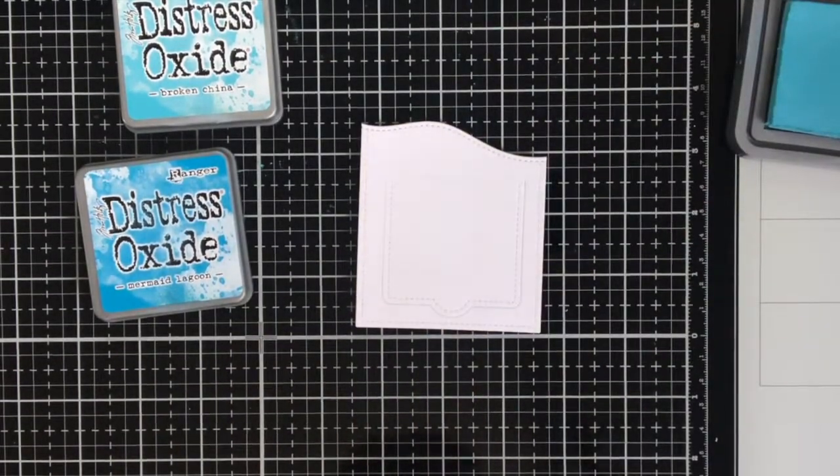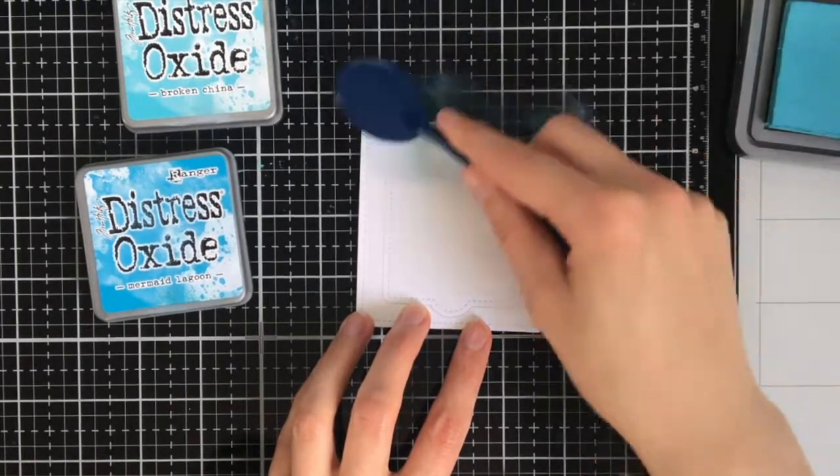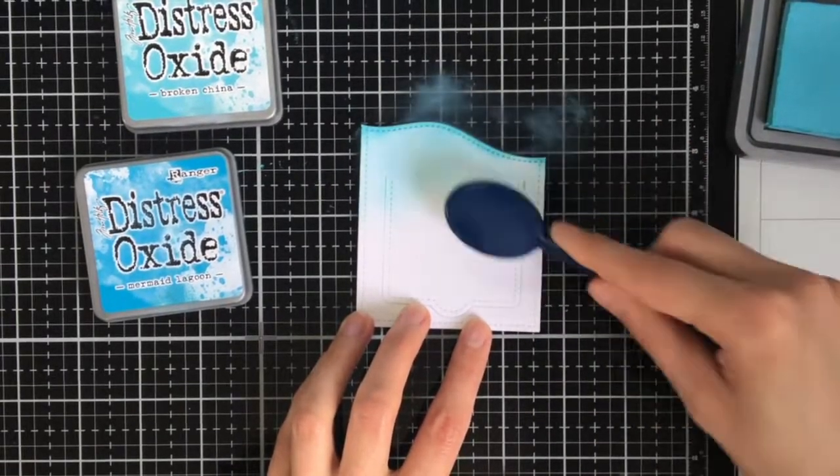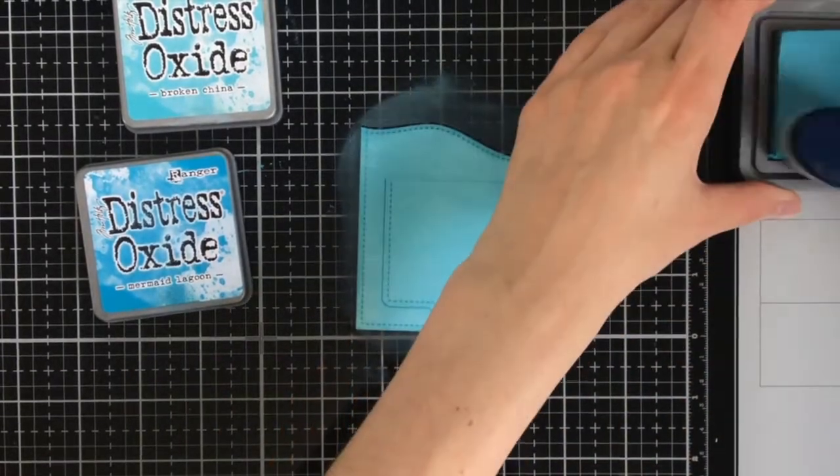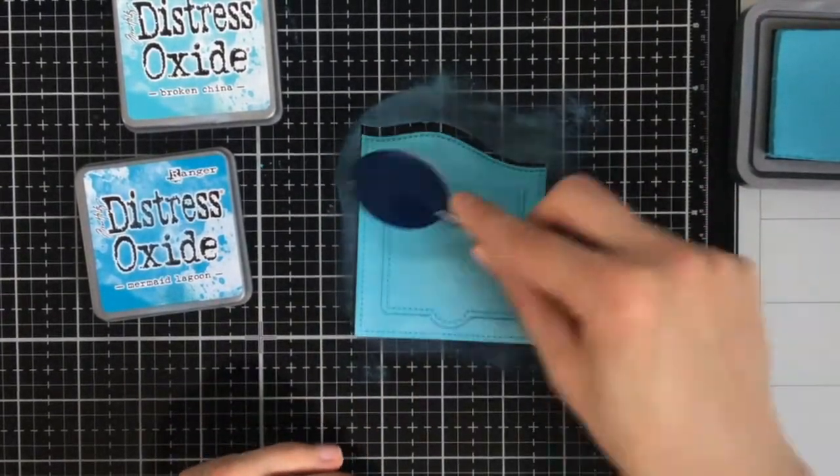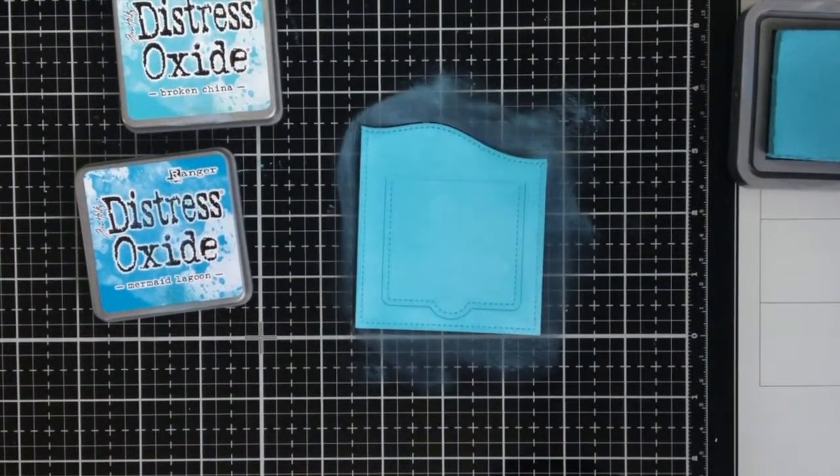First I die cut a white panel with the stitched hillside border slimline die and also with the small slimline so you can see that there are stitches all around this white panel. And once I prepared this basic panel I could also run it through my die cutting machine with the lift the flap die.